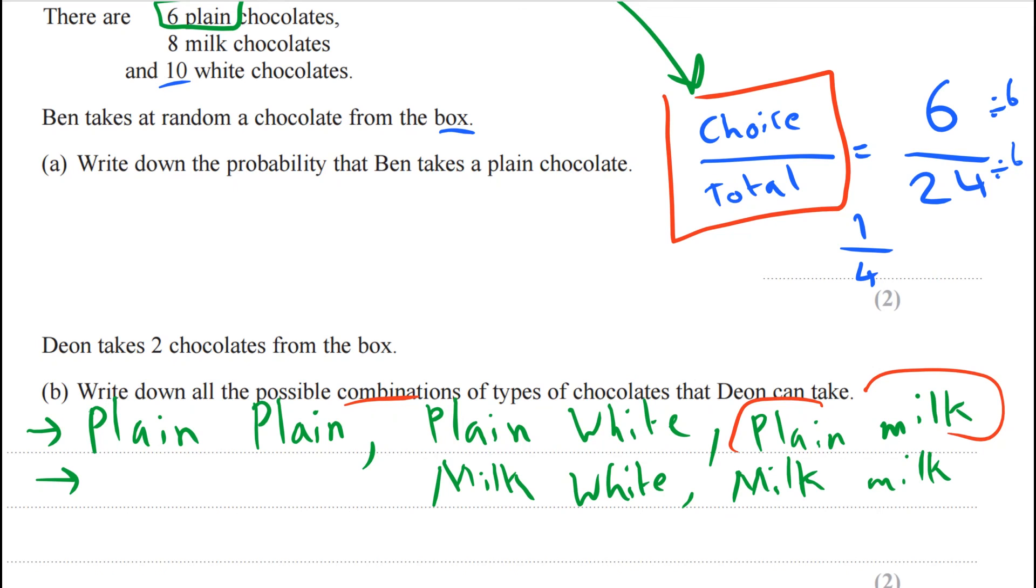So what's the only one left now? We've done the plain row, done the milk row, now let's do the white row. So the only thing that's left is white and then white. Because if you think about it, white and milk is done up here and white and plain is done up here, so we've only got white and white left.